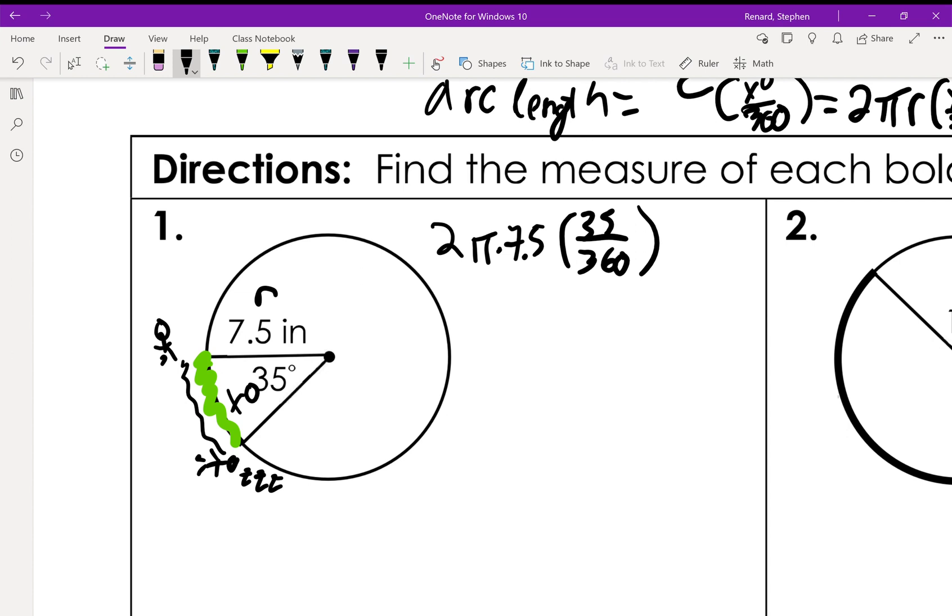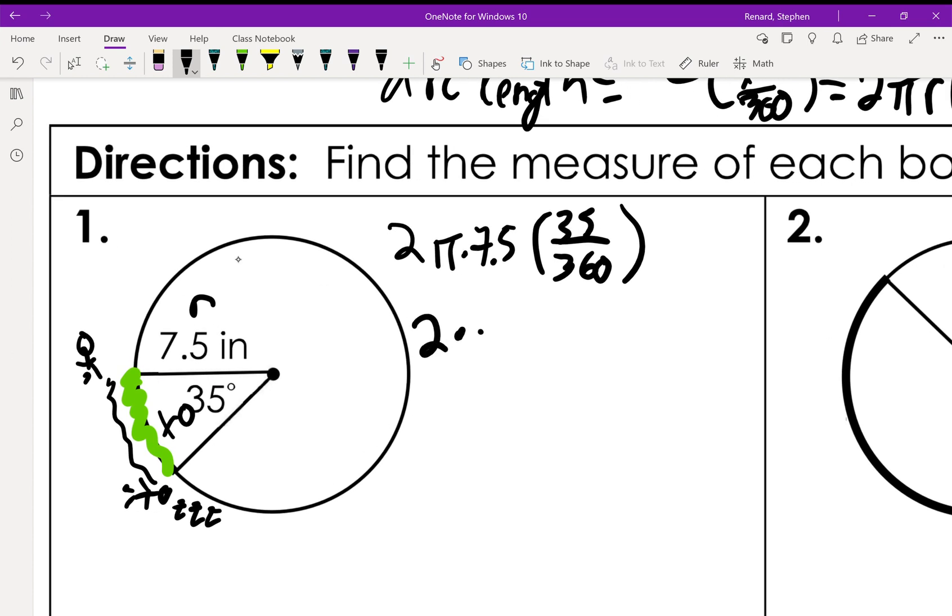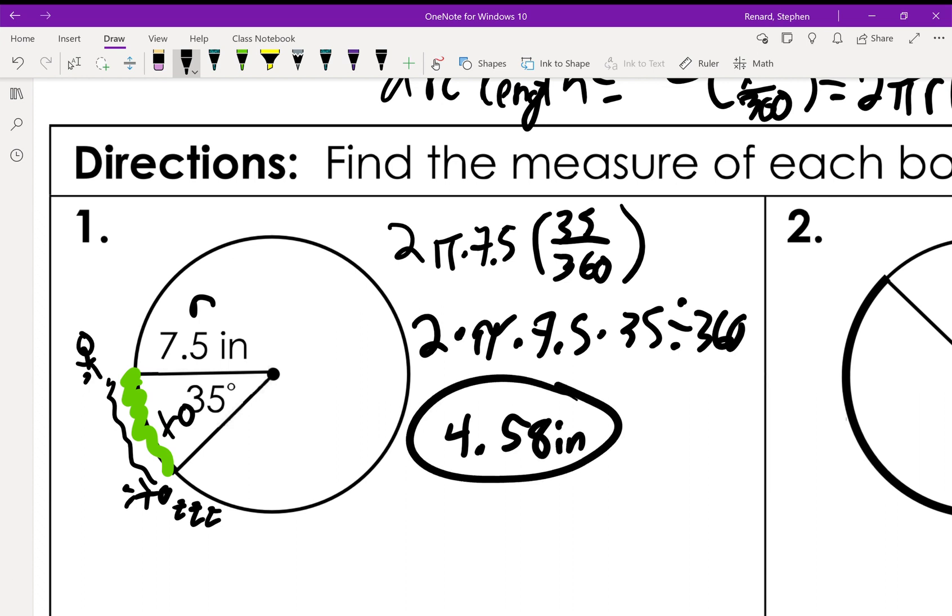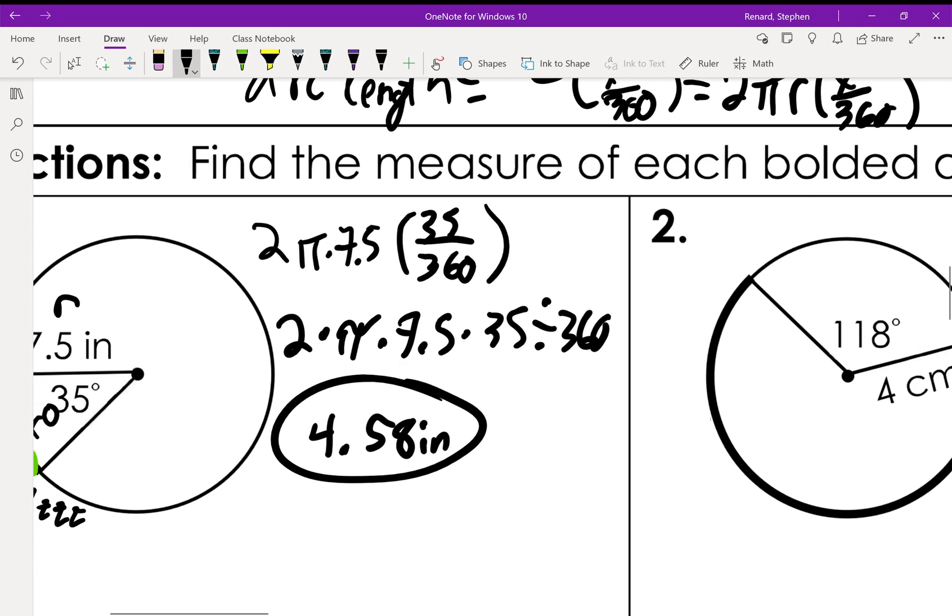Now on your calculator, it really is as simple as: 2 times π times 7.5 times 35 divided by 360. And we get 4.581, so we're going to go 4.58 inches. That's number one.